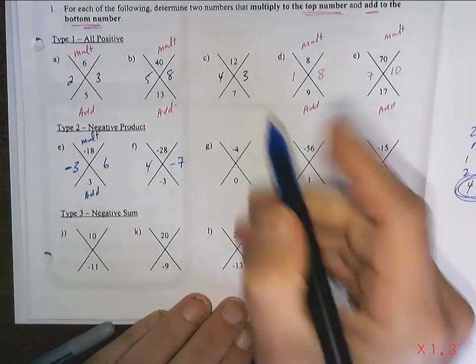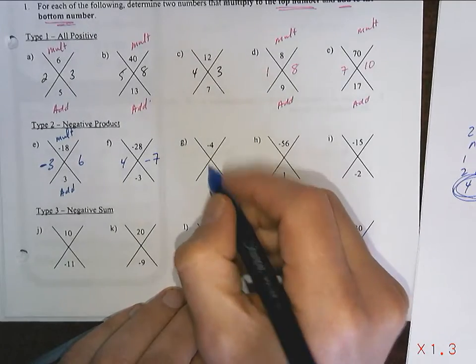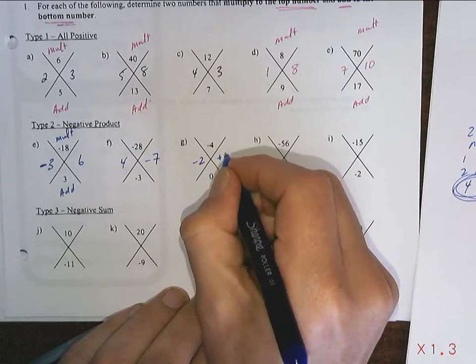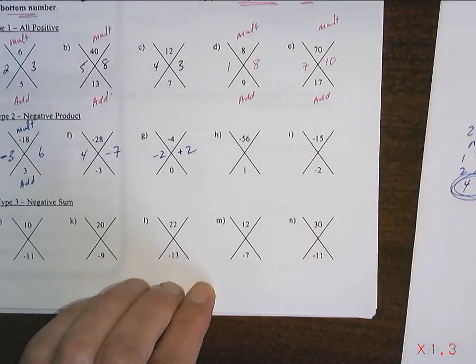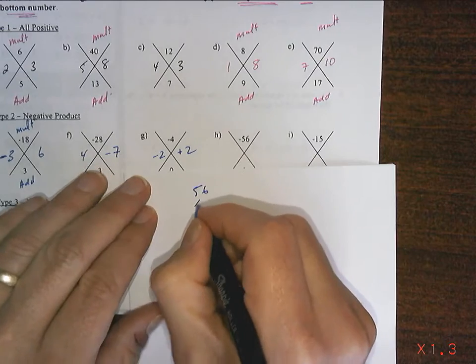We keep going. Two numbers that multiply to give negative 4 but add to give 0. Negative 2 and positive 2. 56. That's a harder one. I would use a factor tree, because that one's hard on my head.